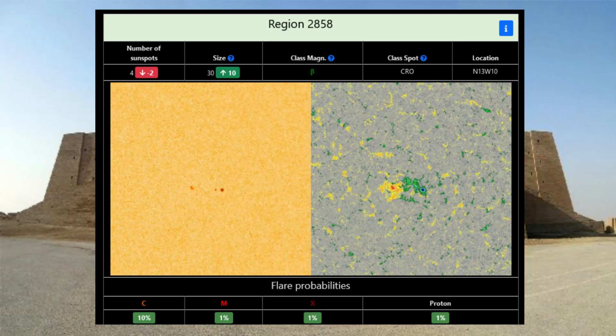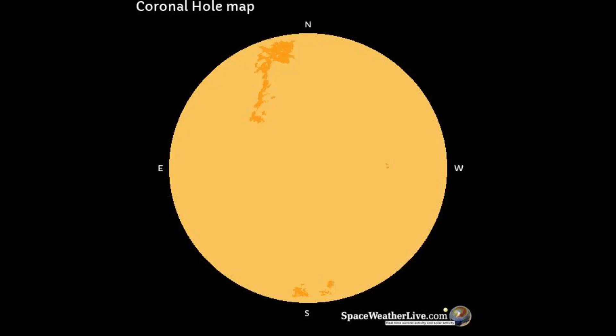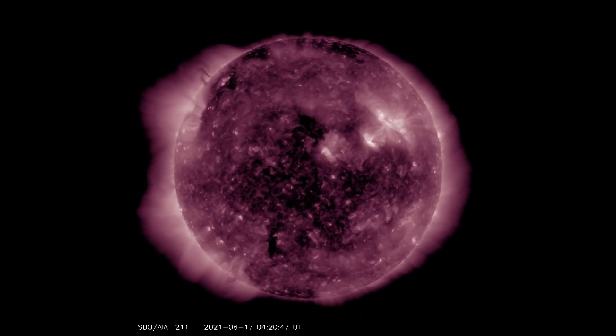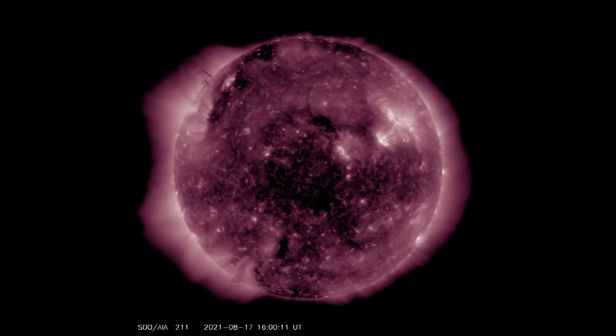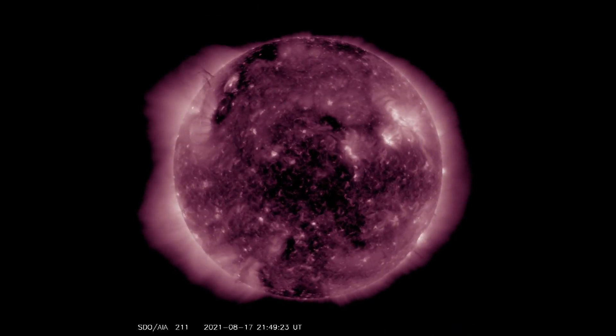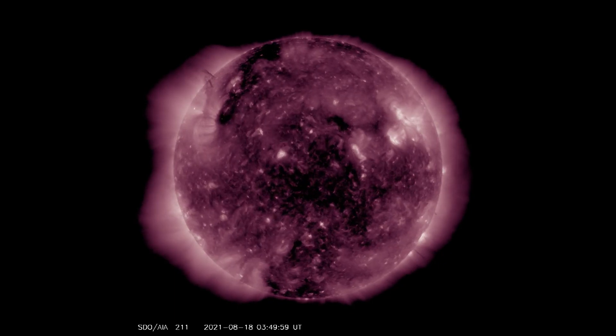There are two coronal holes on the Sun at this time. Using the SDO 211 filter, the coronal holes can be observed.